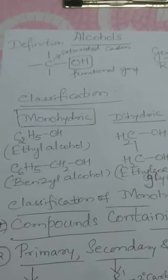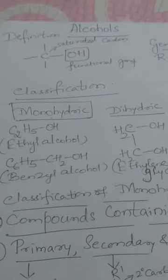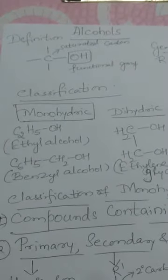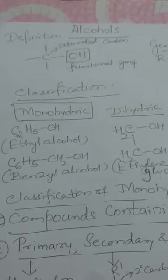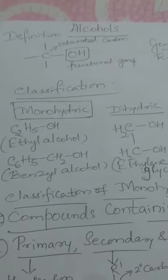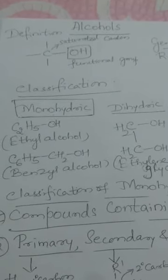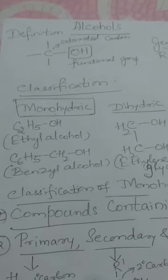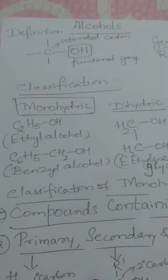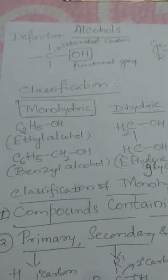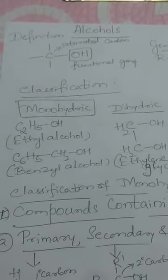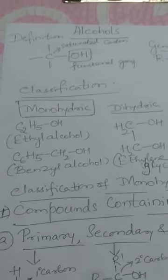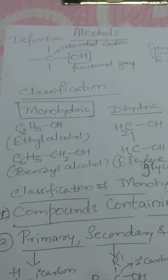Students, we have completed the first chapter on Haloalkanes and Haloarenes. Hope you have taken down the assignment questions and are trying to write the answers for them. Now the next chapter includes three classes of organic compounds containing oxygen: alcohols, phenols, and ethers. We shall study each of them in detail.